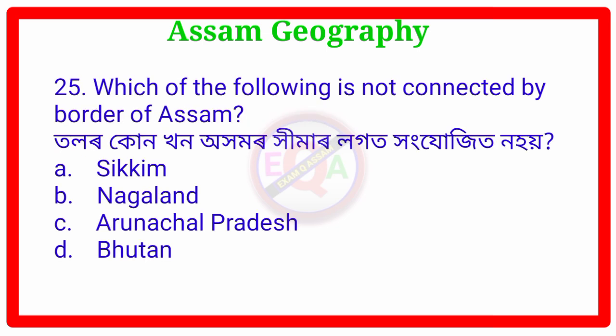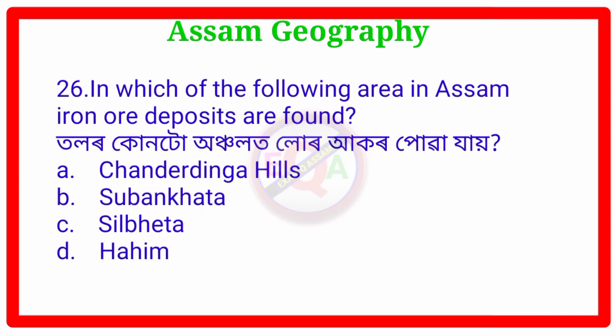Question Number 25. Which of the following is the highest hill range in Assam? In which area of Assam is Iron Ore deposit found? Option A: Sandar Dhinga Hills.